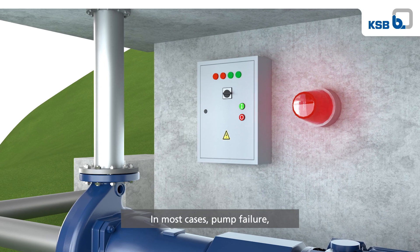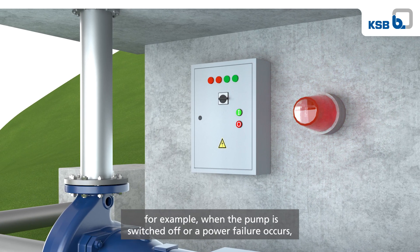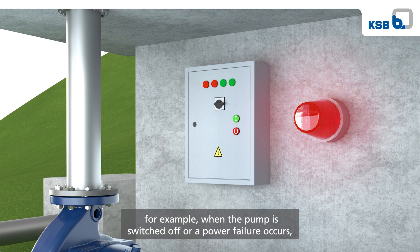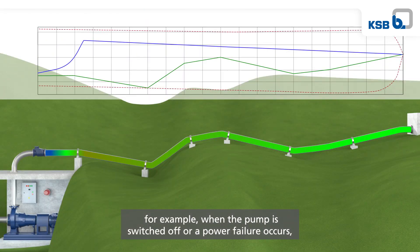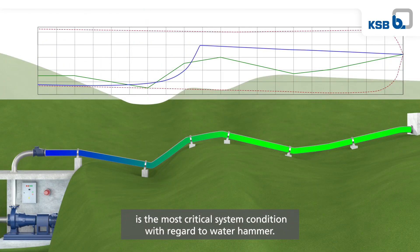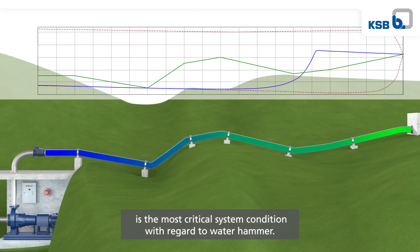The red lines are the envelope curves and represent the maximum and minimum pressures occurring over the entire period. In most cases, pump failure — for example when the pump is switched off or a power failure occurs — is the most critical system condition with regard to water hammer.